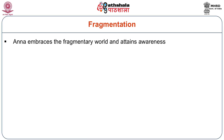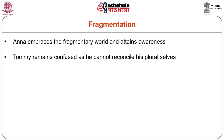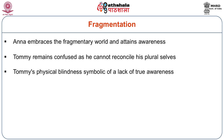Anna embraces a world that is fragmentary and attains awareness, which is not there for someone like Tommy. Tommy is very confused and is not able to reconcile the multiple, plural selves. His physical blindness is also symbolic of a lack of true awareness. Tommy is important as a foil to Anna — whatever Anna is able to do, Tommy fails to do. Perhaps Tommy is the double, the other, of Anna.